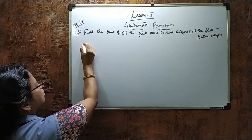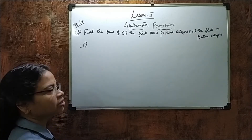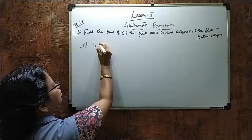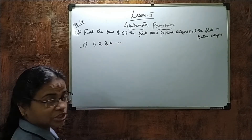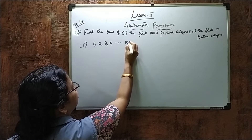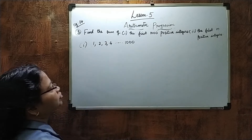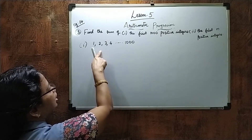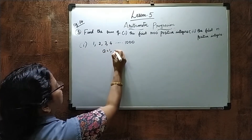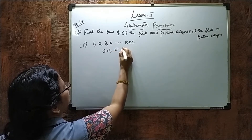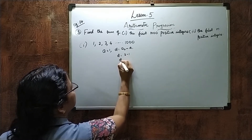We are going to do the first answer now. The first 1000 positive integers means starting with 1, 2, 3, 4, and so on up to 1000. From here we have to find the sum. The first term A equals 1, and D equals A2 minus A1, which is 2 minus 1, equals 1.